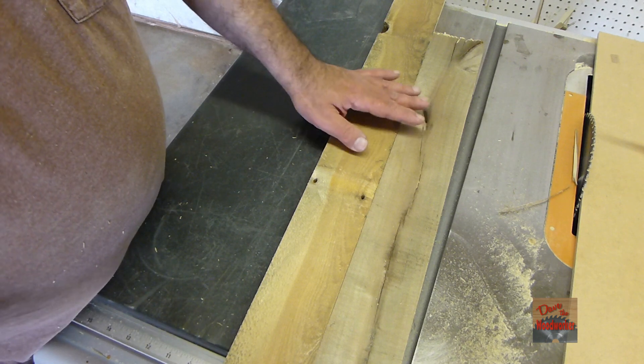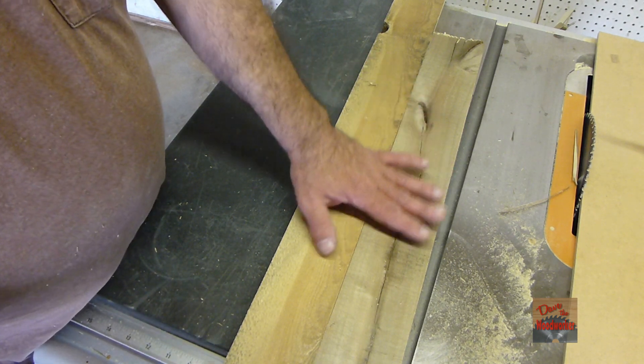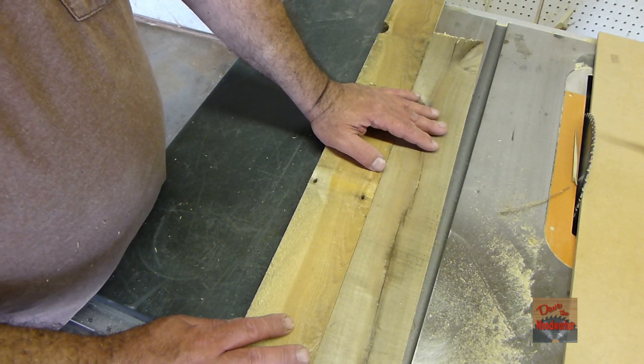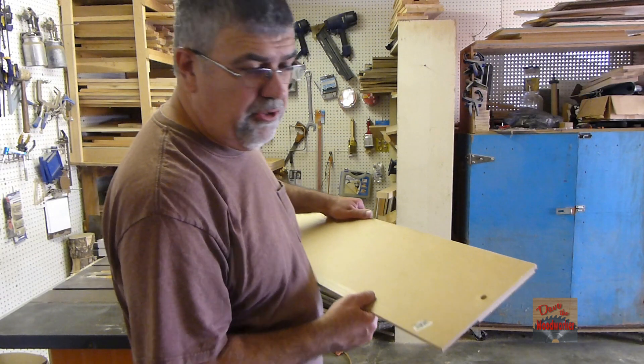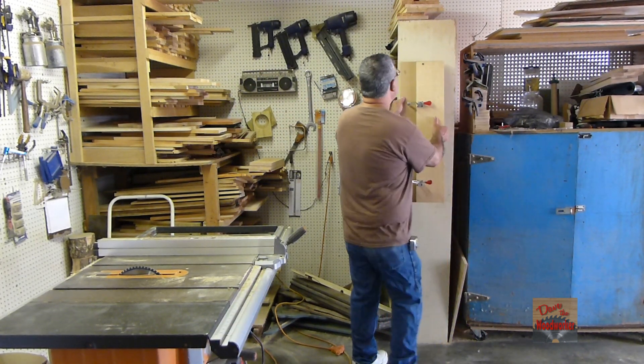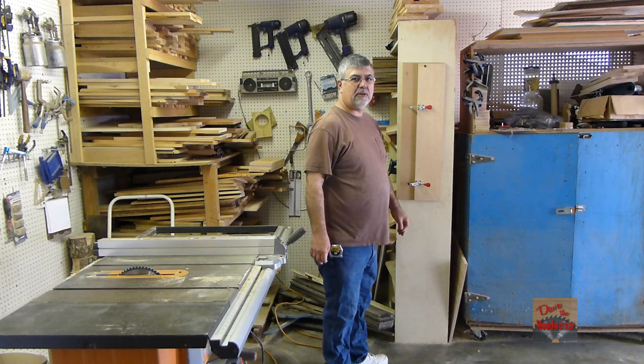The pallet boards are rough, and this is a safer option than using the guide that's on the fence. And when you're not using it, I put a hole in it so we can hang it up out of the way.